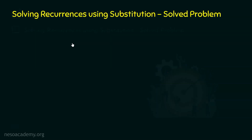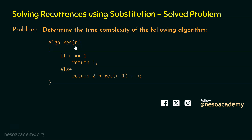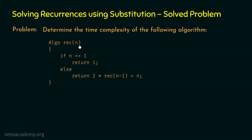Here is the problem: determine the time complexity of the following algorithm. This is the algorithm REC(n). We can observe this is a recursive algorithm because in the body of this algorithm, REC(n-1) is called. So REC(n) is calling itself within its own body — clearly, this is a recursive algorithm.